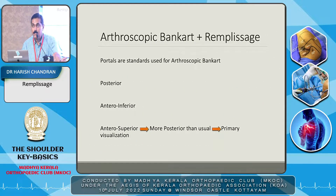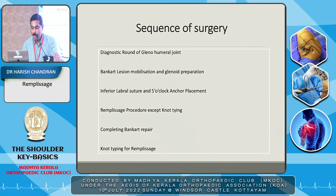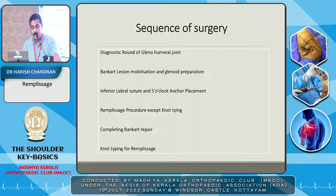When doing arthroscopic Bankart with Remplissage, portals are standard — posterior and anterior inferior or superior portals. The anterior superior portal can be placed more posterior than usual, like a trans-cuff portal, for primary visualization. The sequence is: diagnostic round of the glenohumeral joint, Bankart lesion mobilization and glenoid preparation. You can place an inferolabral suture at a 5 o'clock anchor without tying, do the Remplissage, then complete the Bankart repair, and finally tie the Remplissage knots.